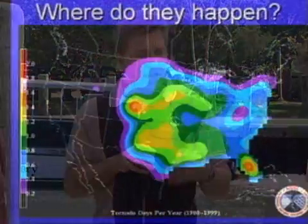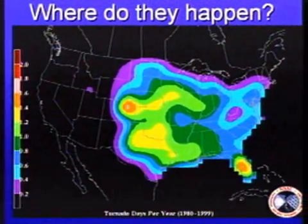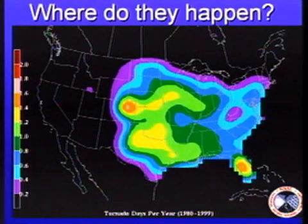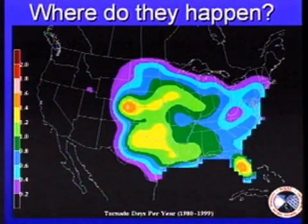We can actually get tornadoes year round here in the Carolinas, so it's something we always have to look out for. This map shows across the country where most of them do happen, and again, in the middle part of the United States is what we call Tornado Alley.